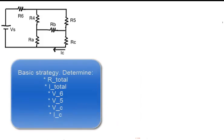Basic strategy is determine the total resistance, total current, voltages across 6, 5, and C, and then the current through resistor C.